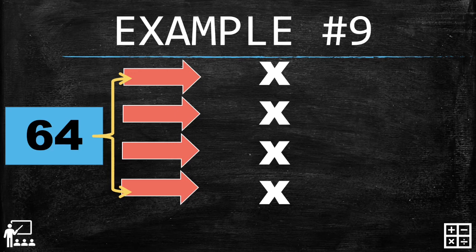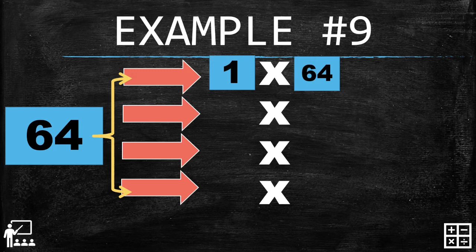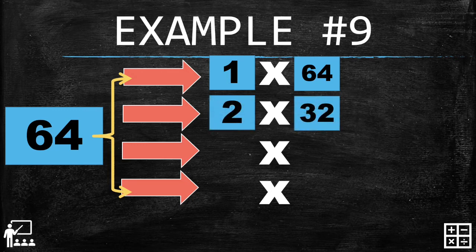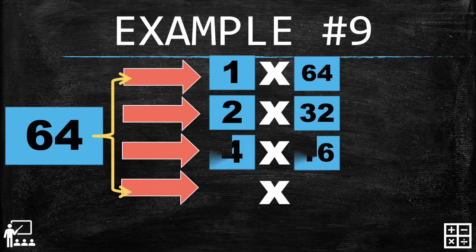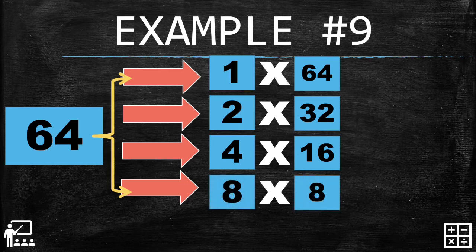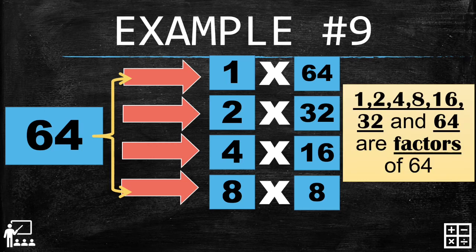Example number nine — two times thirty-two gives us sixty-four, four times sixteen gives us sixty-four. The summary: one, two, four, eight, sixteen, thirty-two, and sixty-four are factors of sixty-four.